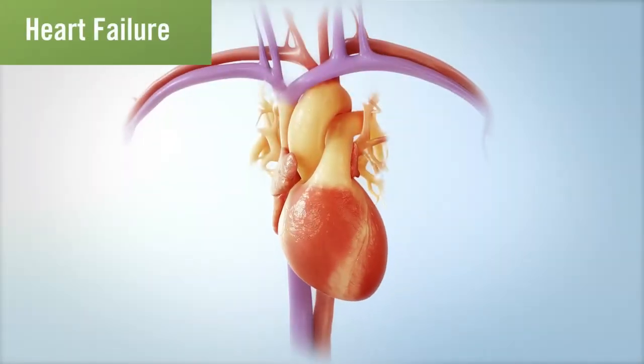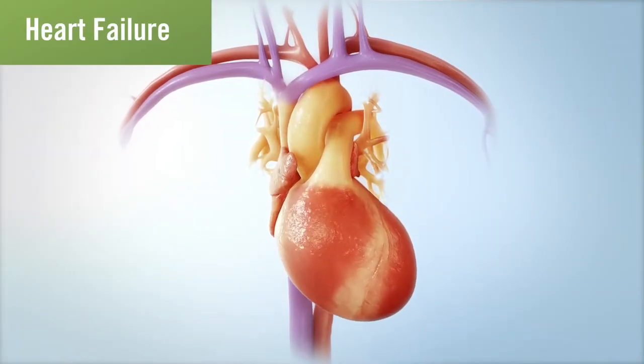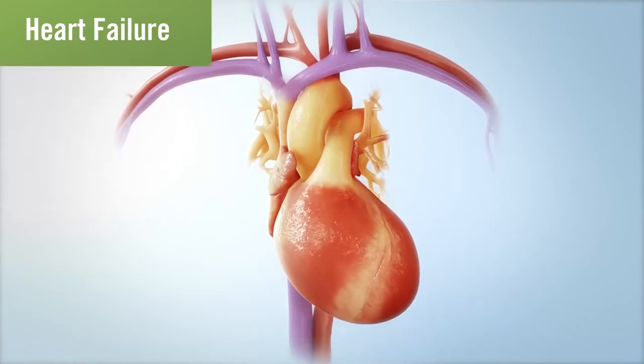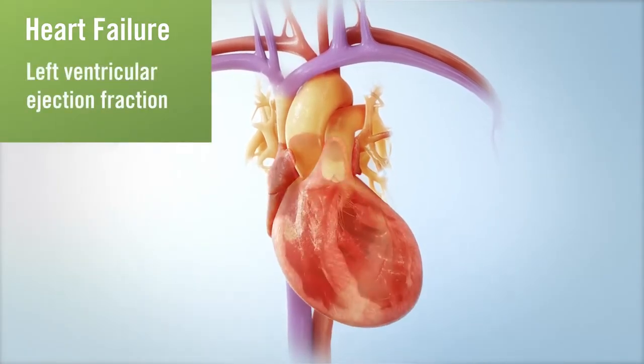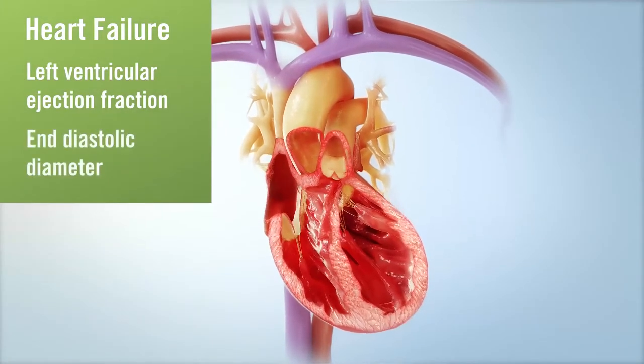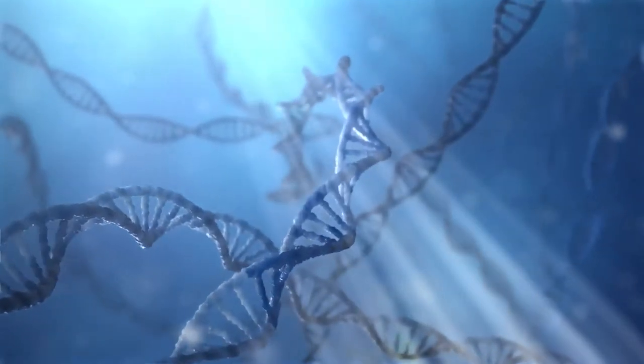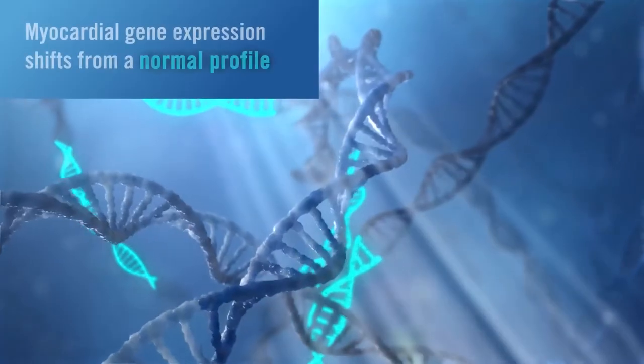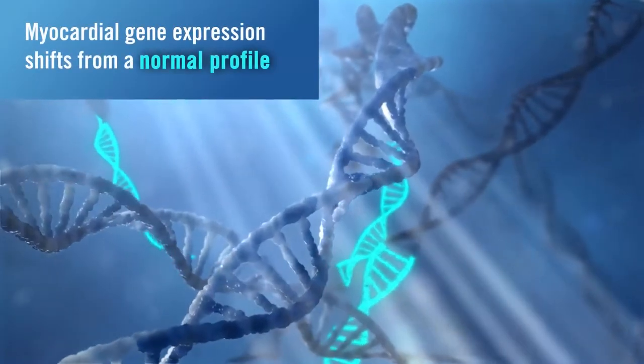The phenotypic measures of worsening heart failure are well known and can be observed using standard measures including left ventricular ejection fraction and end diastolic diameter. In patients with chronic heart failure, myocardial gene expression shifts from a normal profile to an abnormal heart failure profile.